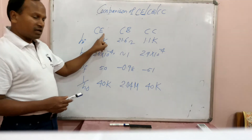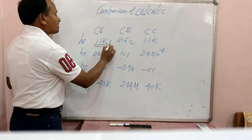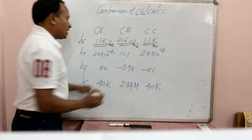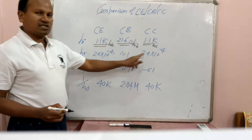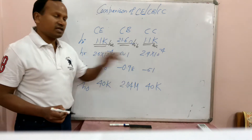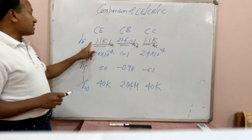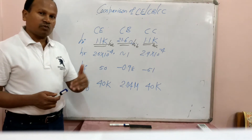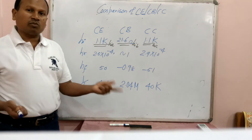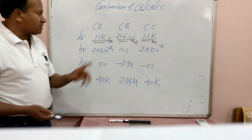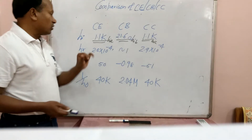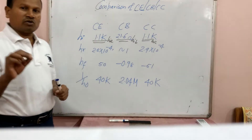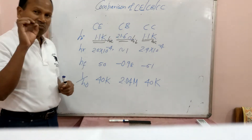Looking at HI — for common emitter it is HIe, for common base it is HIb, and for common collector it is HIc. Similarly we have HRe, HRb, HRc, HFe, HFb, and HFc. The input impedance is almost equal in common collector and common emitter, since both have the base as the input terminal, so base current is the input current and therefore almost the same input impedance is offered — 1.1 kΩ is the standard value. Input impedance is minimum in common base.